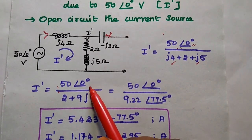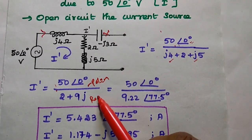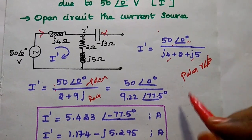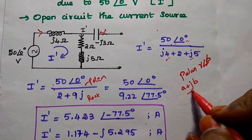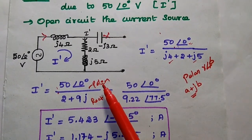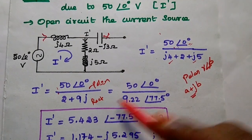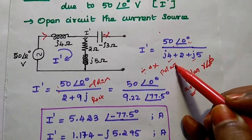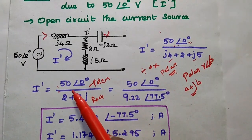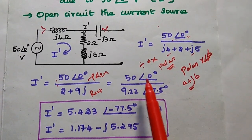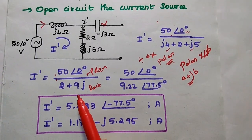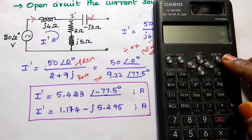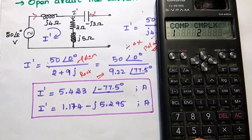The numerator is in polar form and the denominator is in rectangular form. Polar form means magnitude along with phase; rectangular means real and imaginary parts. In case of division, we must keep both numerator and denominator in polar form. So for division and multiplication, we use polar form. We need to convert the rectangular form 2+J9 into polar. For that, switch on the calculator and select mode as complex mode.